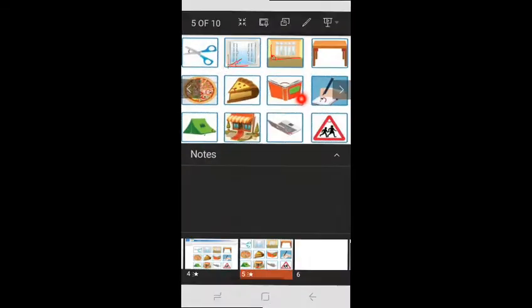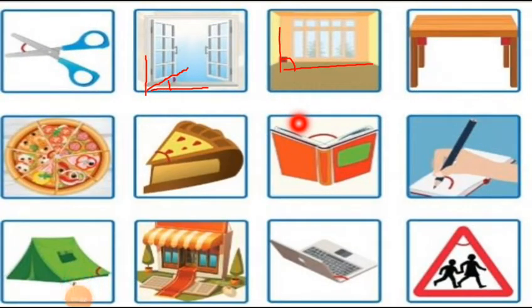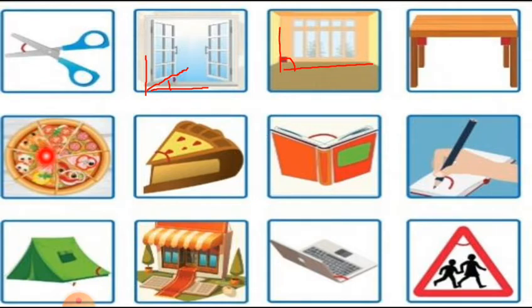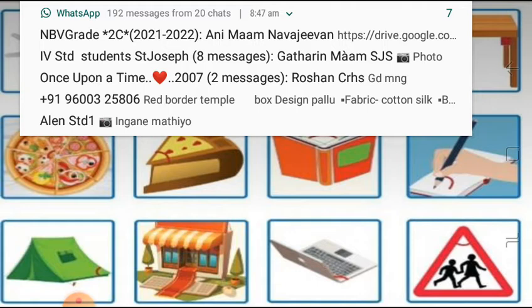Look at this one. Here this angle — the small angle is what we are looking at. This part of the pizza: one part of the pizza shows an acute angle, and here this also shows an acute angle.